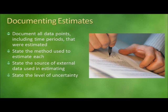Third, state the source of external data used in estimating. Examples of this are data from another facility or a factor from a standard of best practice. And finally, state the level of uncertainty.